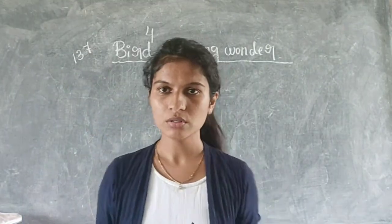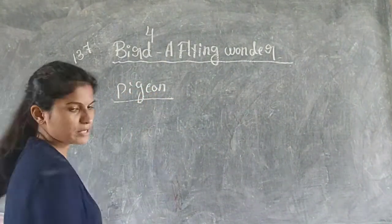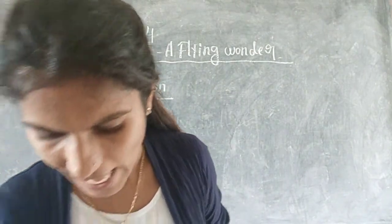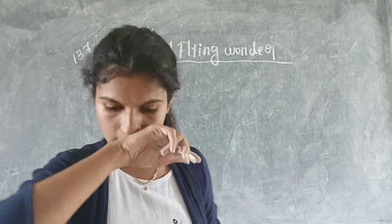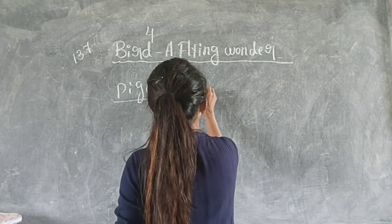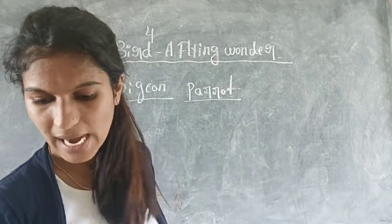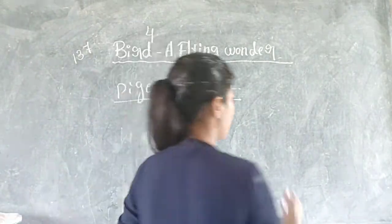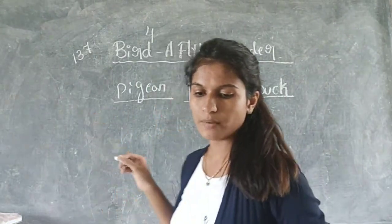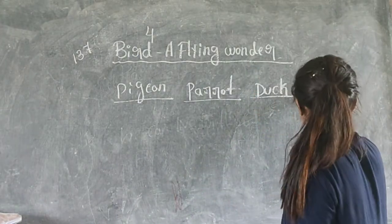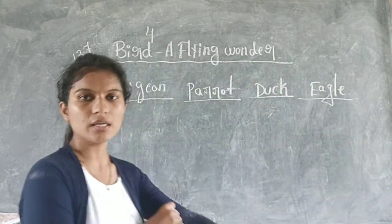The first picture is a pigeon. The second picture shows a bird with a red beak and a green body - that is a parrot. The third picture is a duck. And the last one is an eagle. So these are the four birds: pigeon, parrot, duck, and eagle.